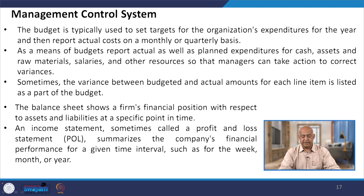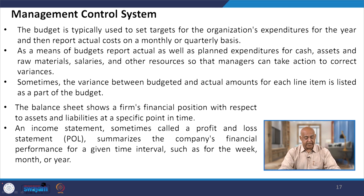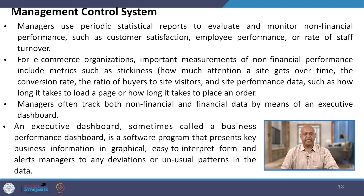Sometimes the variance between budgeted and actual amounts for each line item is listed as part of the budget. The balance sheet shows the firm's financial position with respect to assets and liabilities at a specific point in time. An income statement — sometimes called a profit and loss statement — summarizes the company's financial performance for a given time interval such as a week, month, or year.